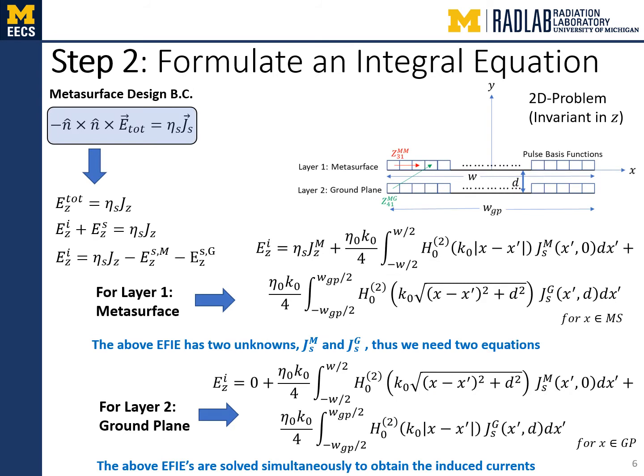In step two, we formulate the integral equation. The geometry is invariant in the z-direction and hence the problem is two-dimensional. From the impedance boundary condition, an integral equation for each layer can be formulated. The first integral equation, with observations made on the metasurface, relates the incident field to the total field minus the scattered field from the currents on the metasurface minus the scattered field from the currents on the ground plane. The scattered fields are found from convolving the current density with the two-dimensional Green's function for free space. There are two EFIEs and two unknowns: the induced current density on the metasurface and that on the ground plane, solved simultaneously using the method of moments.